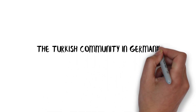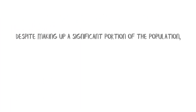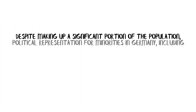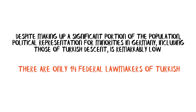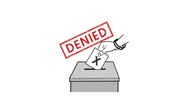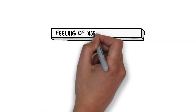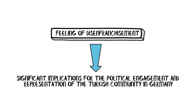A fascinating aspect of modern German politics is the Turkish community's role. Despite making up a significant portion of the population, political representation for minorities in Germany, including those of Turkish descent, is remarkably low — only 14 federal lawmakers of Turkish background out of over 700 in the Bundestag. Many, despite having lived in Germany for decades, don't possess voting rights. This has led to a feeling of disenfranchisement with significant implications for the political engagement and representation of the Turkish community.